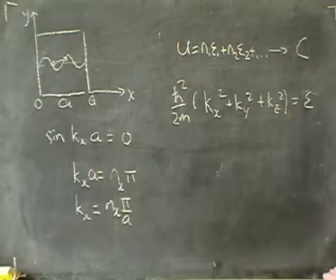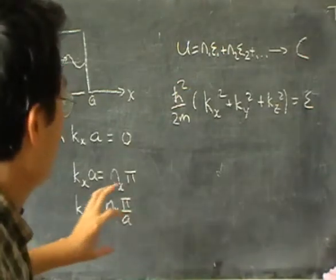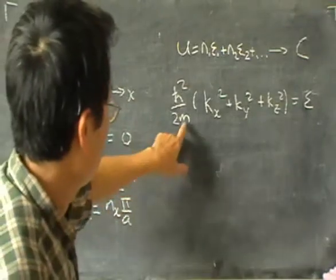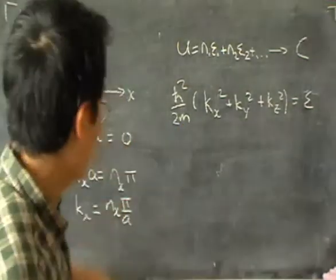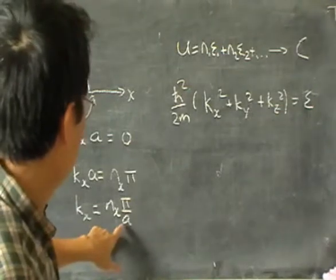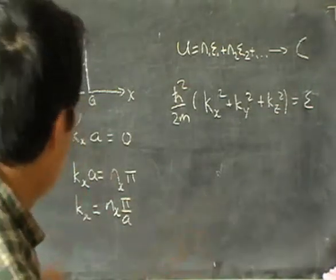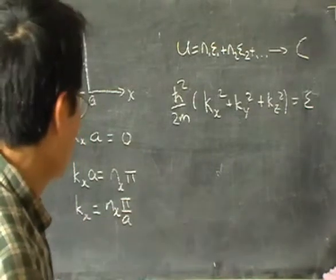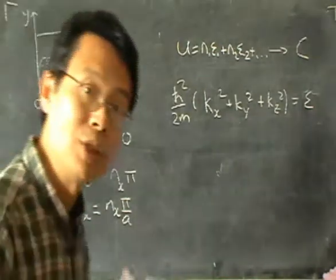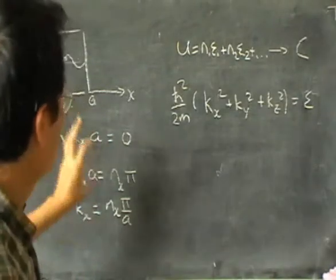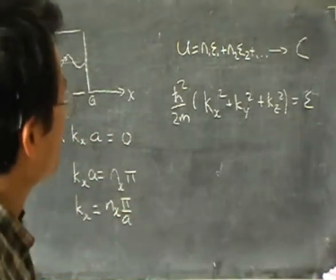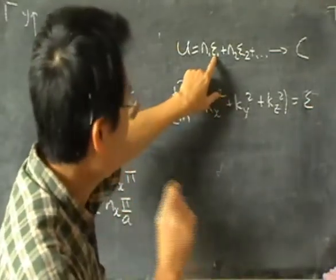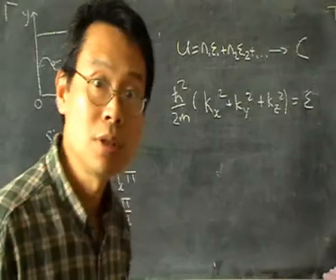In principle, now that we have a way to calculate the energy — because we know the mass of each atom, and if we have a particular box we know the length a — and we know that n_x must be an integer going 0, 1, 2, 3, 4, and so on, this means that we know, in principle, all the energy levels. So it seems that we can then go on to find the population of particles at each level. But before that, there is something we need to do.